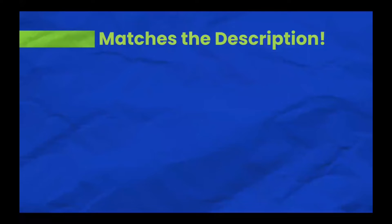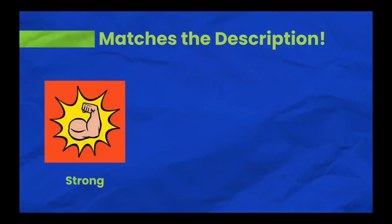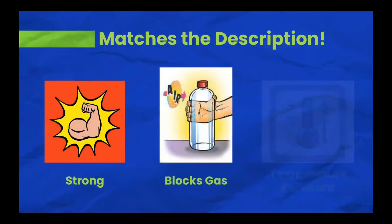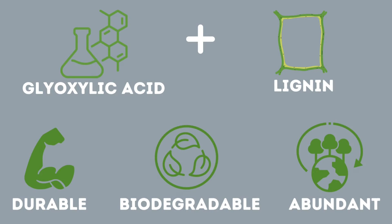Furthermore, unlike the previous failed alternatives to plastics scientists have come up with, this new alternative has properties that are so close to the conventional plastic we use. It is strong, blocks gases, and can resist high temperatures. They combine this glyoxylic acid with lignin to make the durable, biodegradable, and abundant plastic.